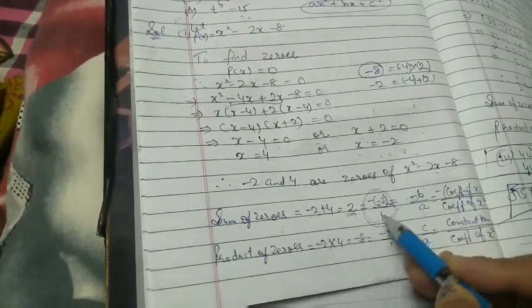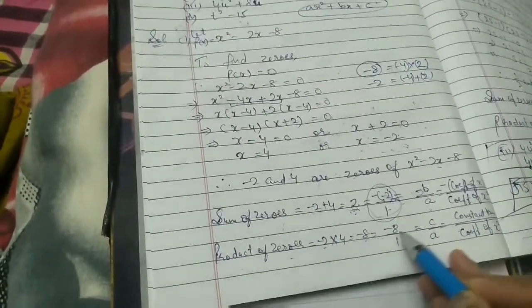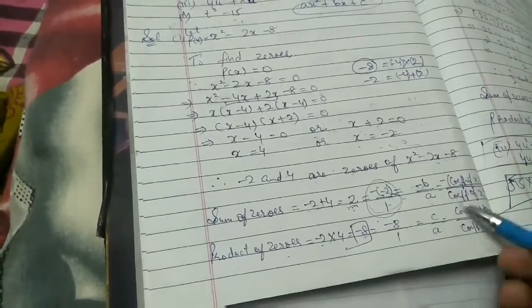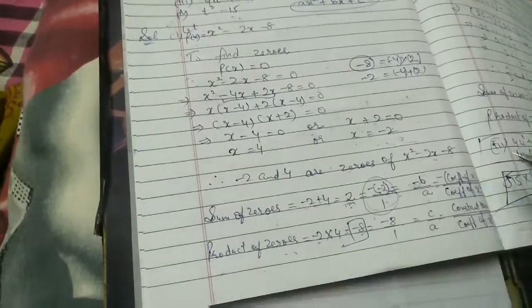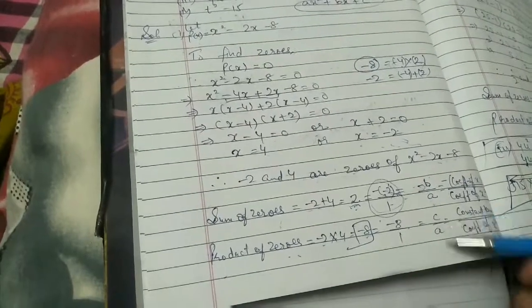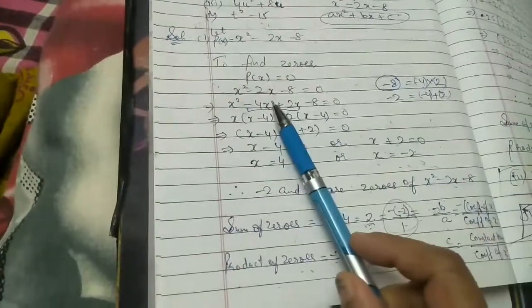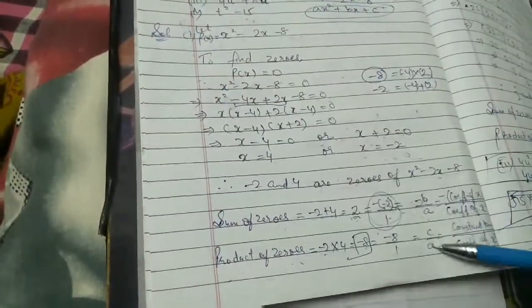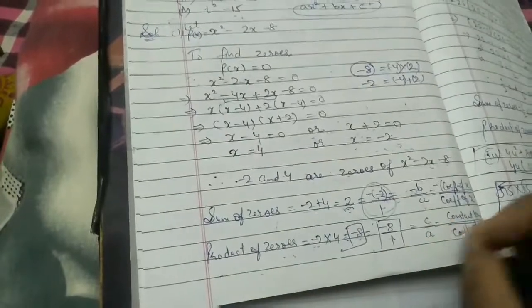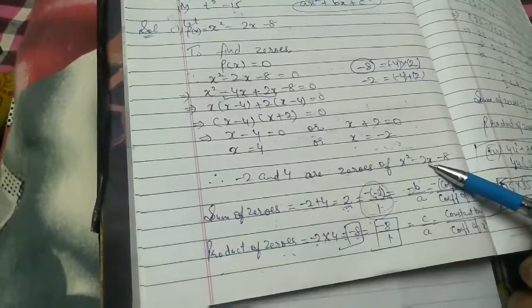Product of zeros: -2 × 4 = -8. According to the formula, product of zeros equals c/a, which is the constant term divided by the coefficient of x². That's -8/1 = -8. Therefore, our result is verified. The zeros are -2 and 4 for x² - 2x - 8.